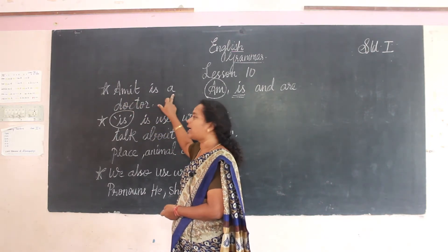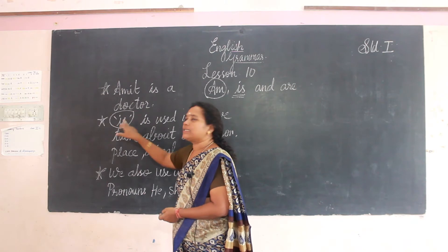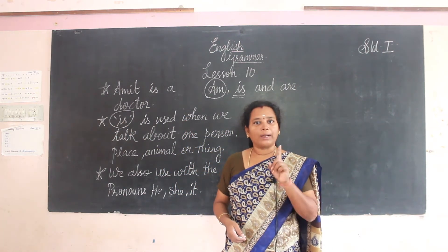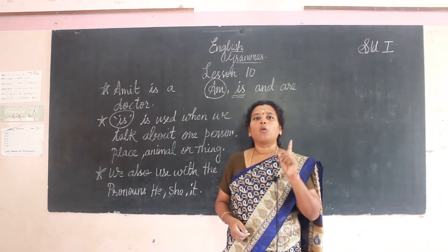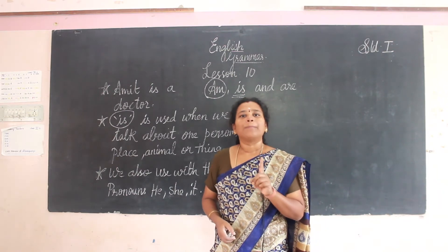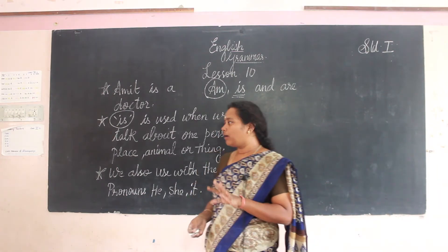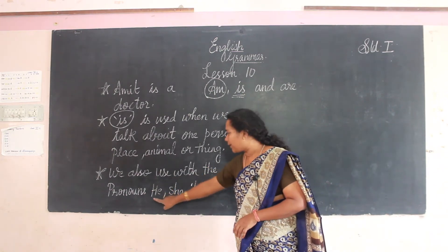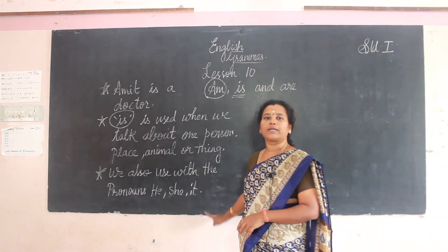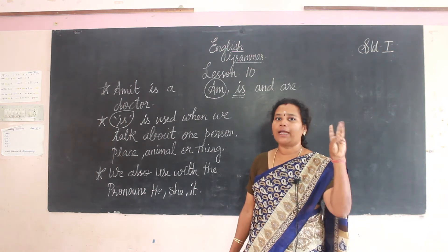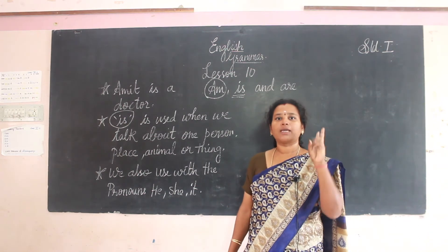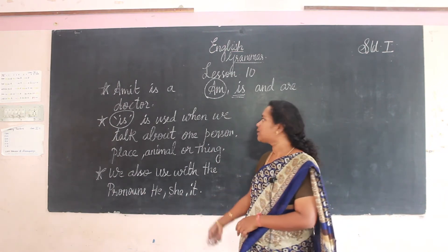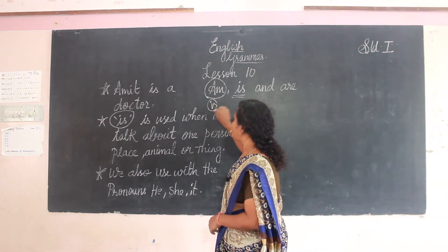So, 'Amit is a doctor' — Amit is a single person, so we have written 'is'. 'Is' is used when we talk about one person, one animal, one thing, or one place. Another condition: we use 'is' with the pronouns 'he', 'she', and 'it'. Are you clear about this?